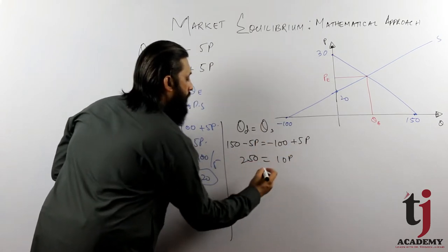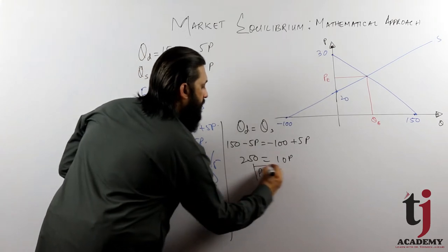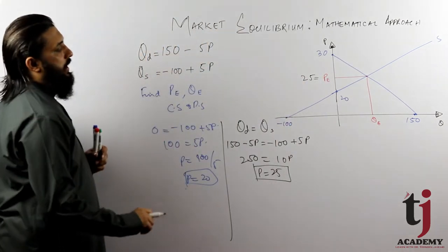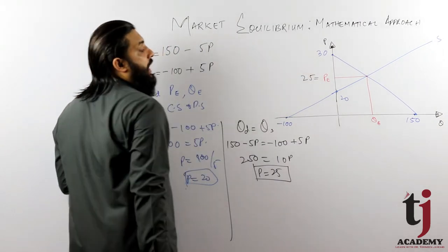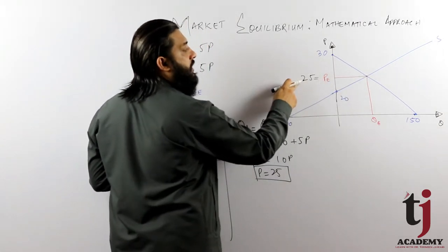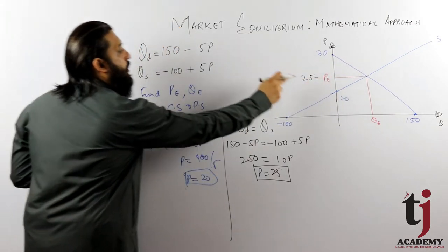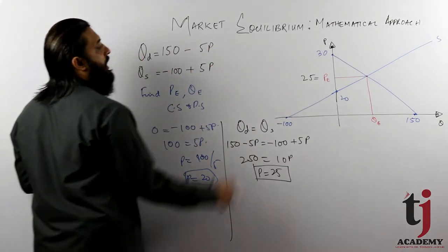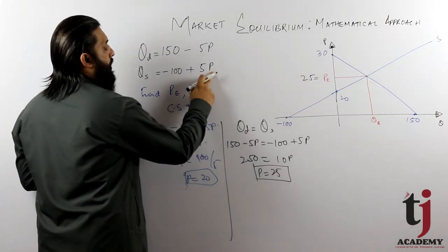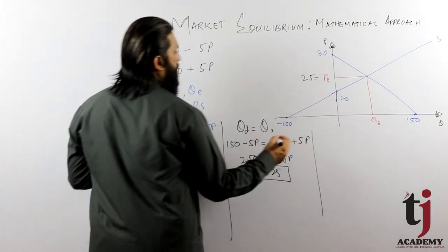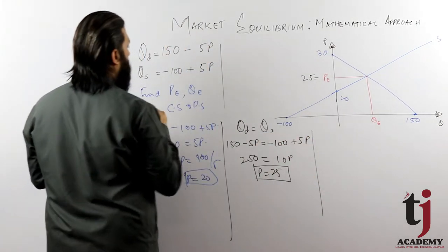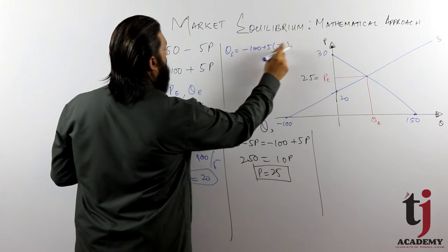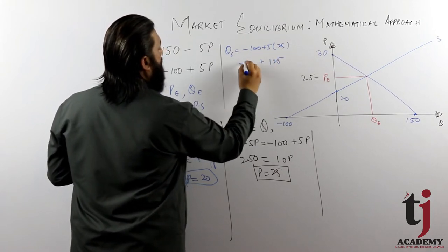Solving: 250 equals 10P, so price equals 25. This is the equilibrium price we have received. Now quantity can be found. You can see this point is at price 25, where demand and supply intersect. Substituting 25 into the supply function: quantity supply = minus 100 plus 5 times 25, which is 125 minus 100.